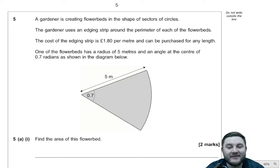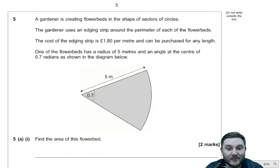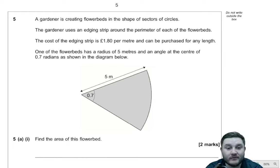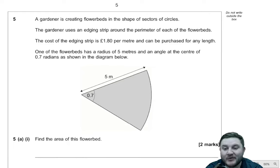Hello there. Mr Wilson here again for Part 2 of going through the November 2021 A-Level Maths Paper 3 by AQA. If you haven't already, definitely check out the previous part because we finished the multiple choice questions and had a go at question four. So in this part we're going to start on question five.